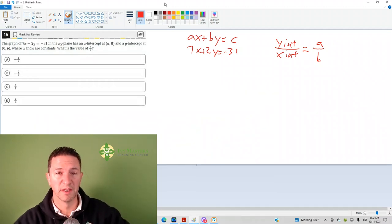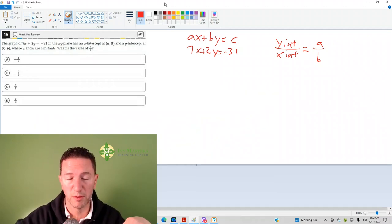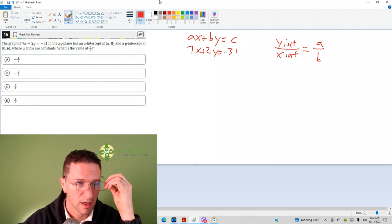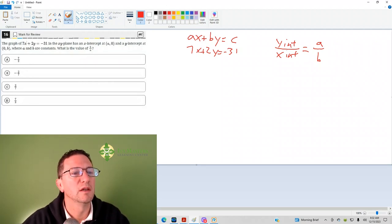This is the 16th question from the Digital SAT Test 1 Module 2 from the Blue Book App, the hardest set of math questions. Number 16: you've got 7x plus 2y equals negative 31, x intercept at (a, 0), y intercept at (0, b),